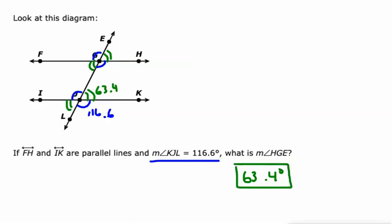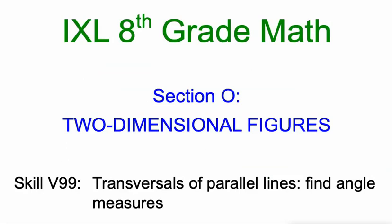Once you know one angle, three other angles are congruent to that angle, and the other four angles are supplementary to that angle. Those are the kind of relationships that are formed when a transversal cuts through a pair of parallel lines. Good luck and let me know how it goes.